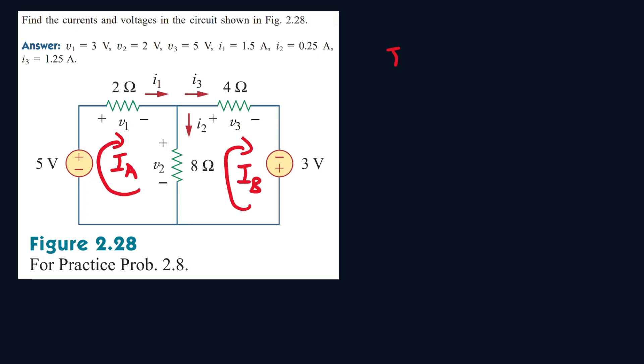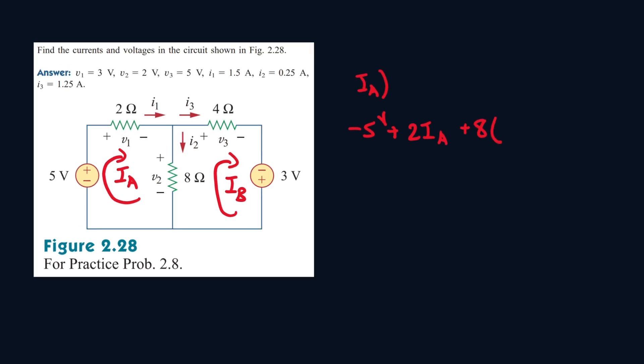Okay, so let's write the equation for IA. IA will be minus 5 volts. Then it enters the 2 ohm, so it will be 2 times IA, plus 8 IA minus IB. And that's it. And it's that because IA is moving this way, IB is moving that way, so it will be IA minus IB.